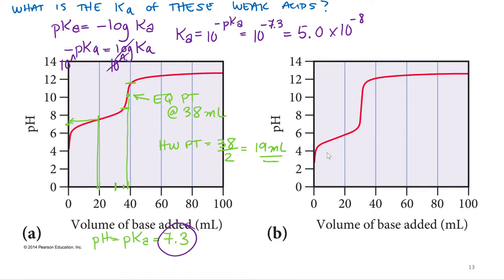We're going to do another example of determining the Ka and pKa of a weak acid based off of its titration curve. So we did that first one, A, previously, so let's take a look at B.